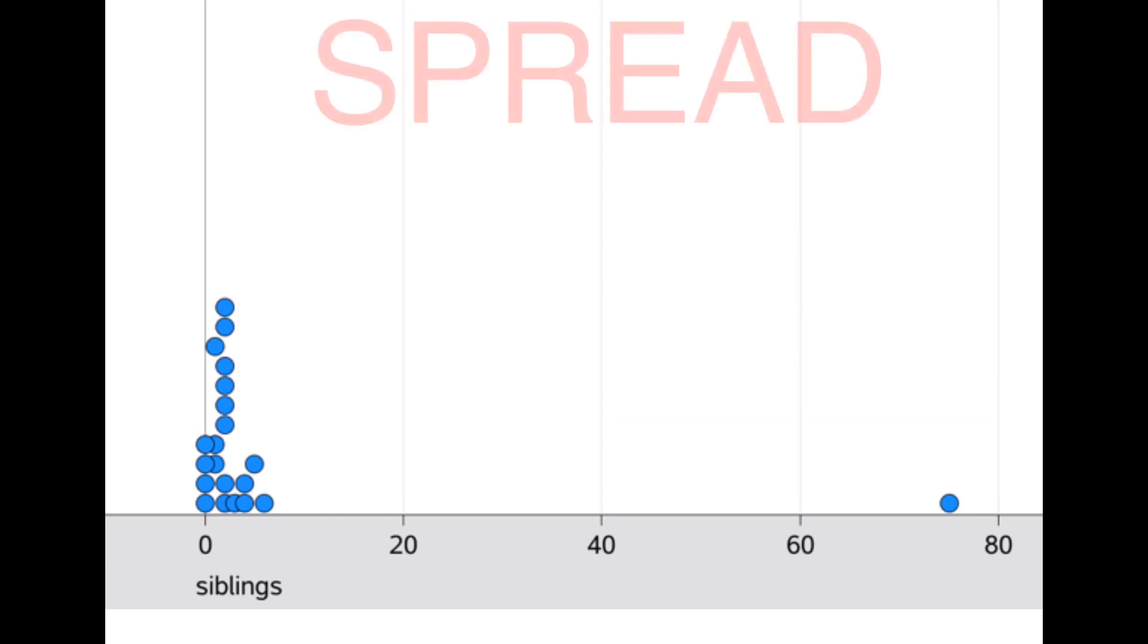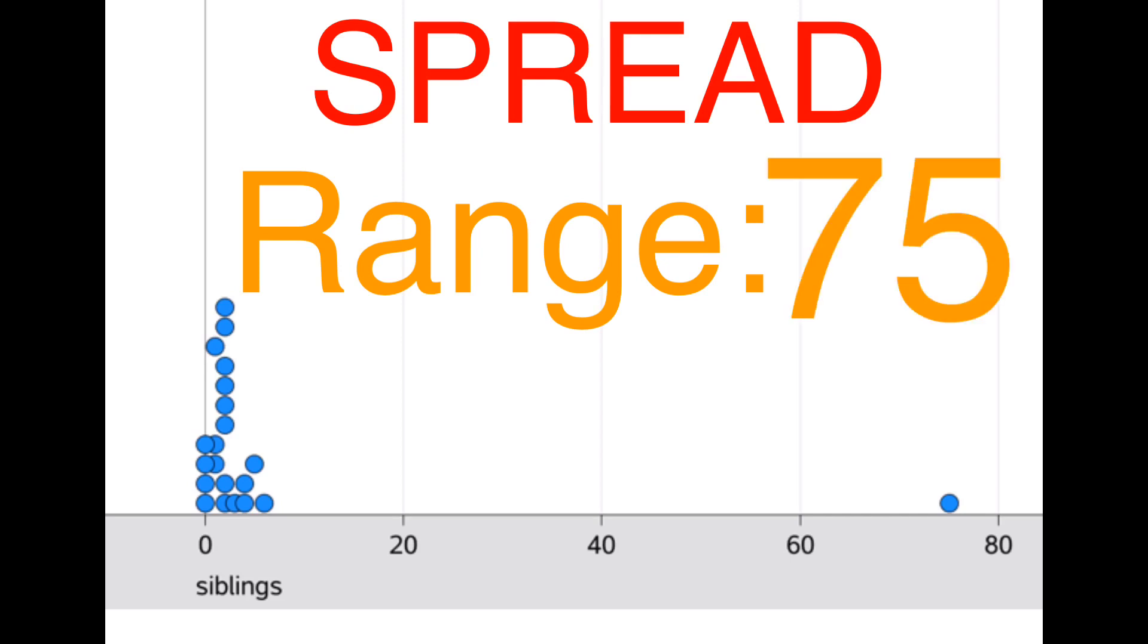As for the spread, changing the point value changed the range from 7 to 75, making the variability higher.